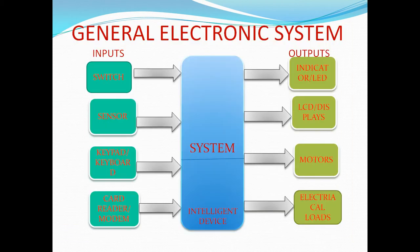Coming to the general electronic system: an electronic system is an integration of different software and hardware combinations. Any electronic system is a combination of software and hardware, and it consists of one or more inputs and one or more outputs. The system has to operate with a specific input, controlled by a programmable device.